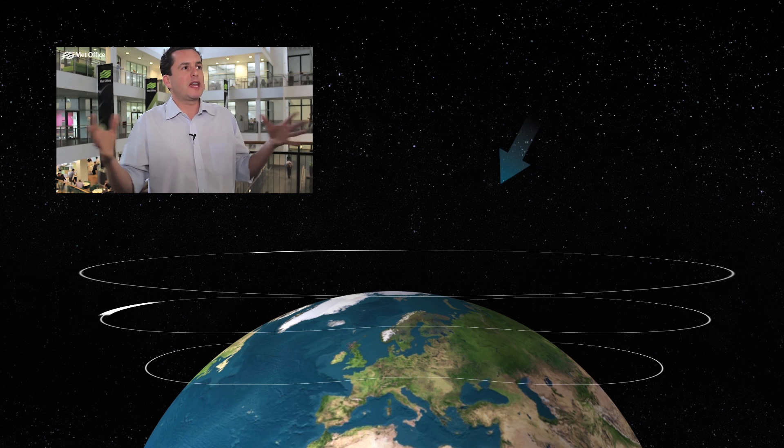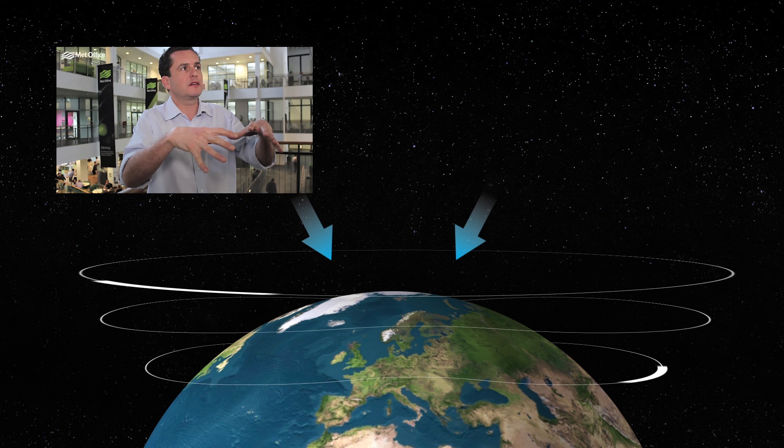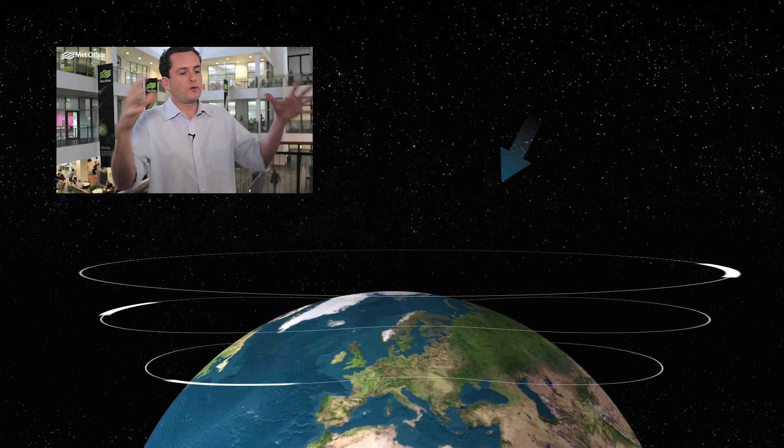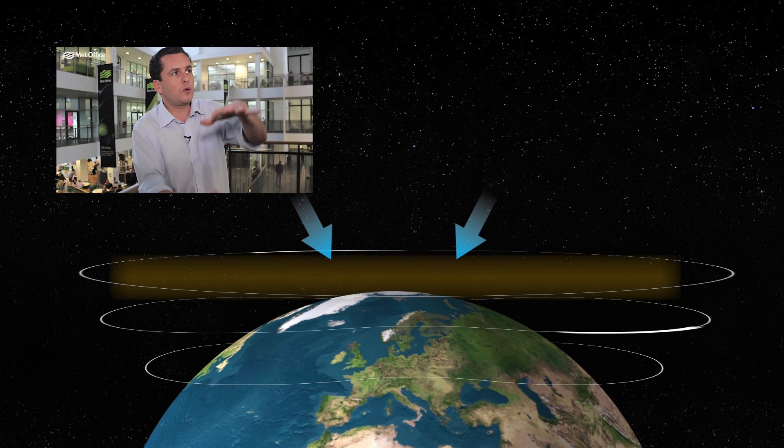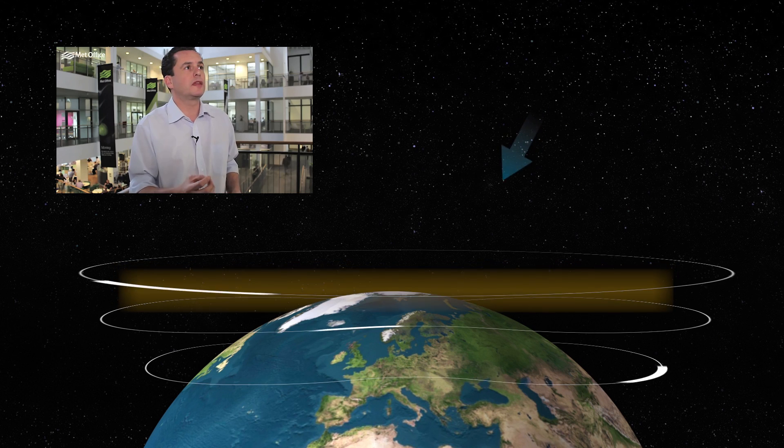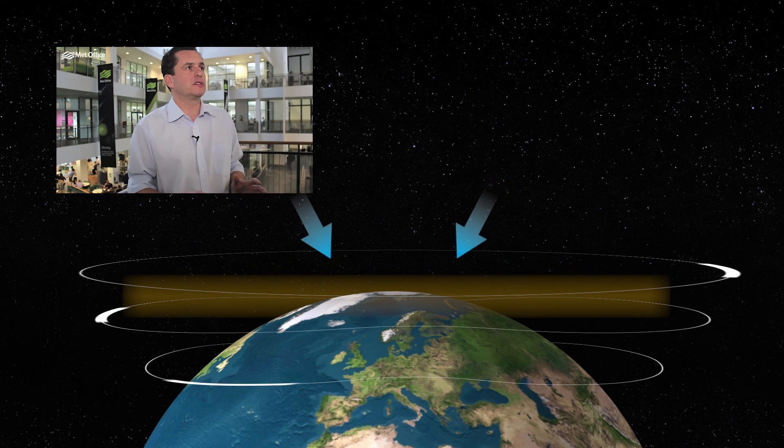At this point, the air starts to fall into the Arctic, and because it's all falling into the Arctic and getting squashed, it starts to warm. There's no heating going on as such, but you are compressing the air and therefore warming it, and the temperature can rise by as much as 50 degrees in just a few days.